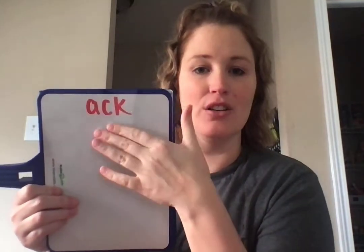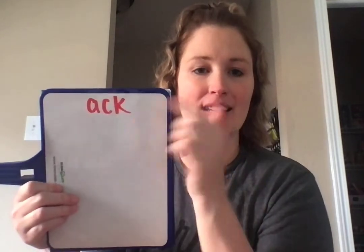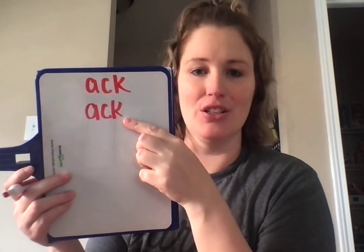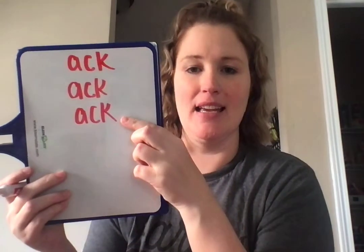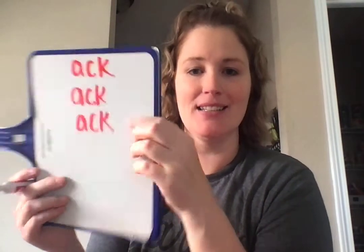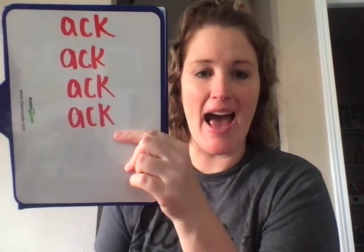What does A, C, K say? Ack. Our C and our K go together to make the K sound, so ack, ack. Let's practice reading some words that have ack. A, C, K says ack.